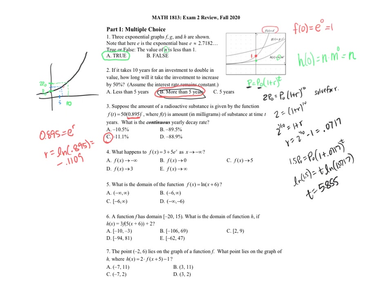How did I know to do that? Because I'm comparing the two models: P naught times (1 plus R) to the T, which equals P naught times e to the RT. The base of the first model equals e to the continuous rate, so setting those equal lets us find the different rates.